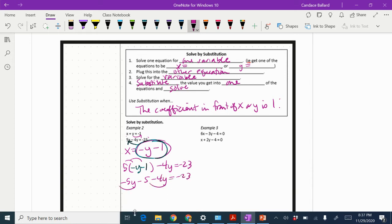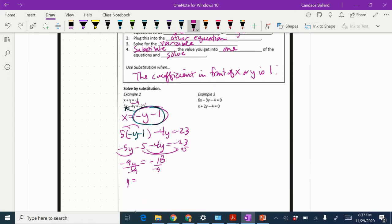And then I'm going to distribute the 5. So I get negative 5y minus 5 minus 4y equals negative 23. We're going to combine together the negative 5y and the negative 4y to give me negative 9y. I'm going to add that 5 to the other side, so that's going to give me negative 18. And then I'm going to divide by negative 9, which means that y is equal to 2.